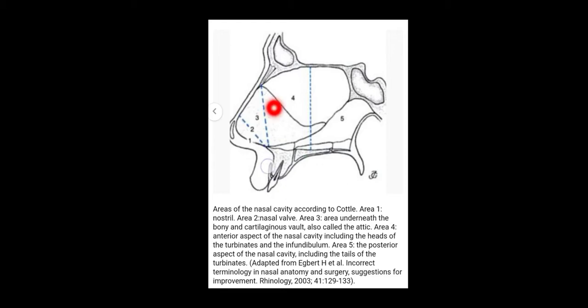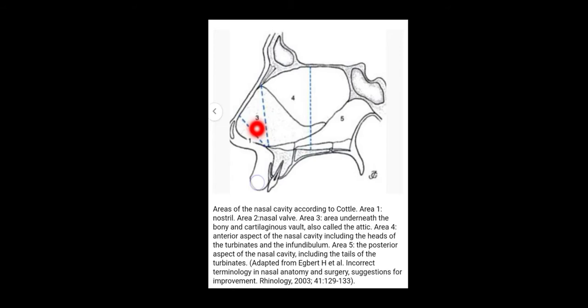Number three, within these two lines, is area number three — underneath the bony and cartilaginous vault. This is also called the attic.